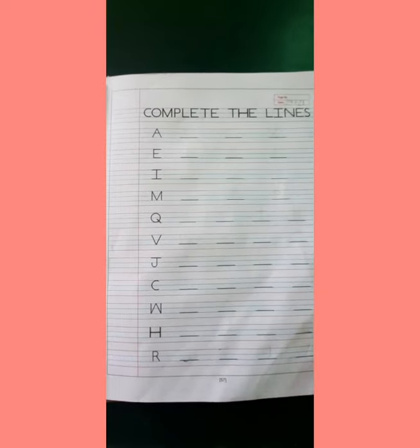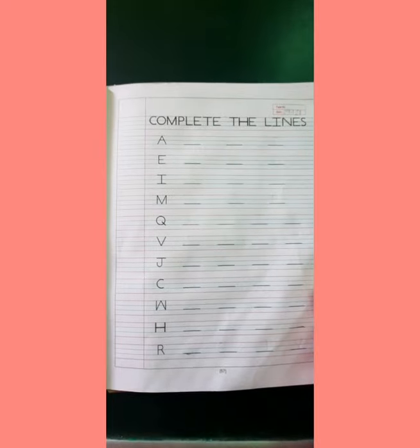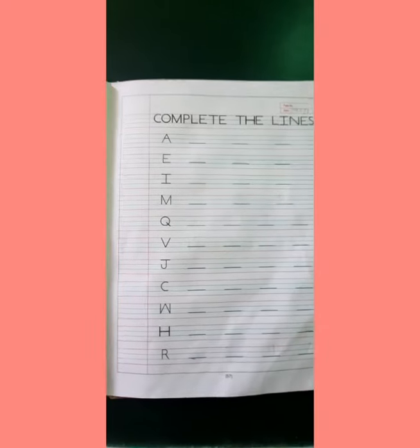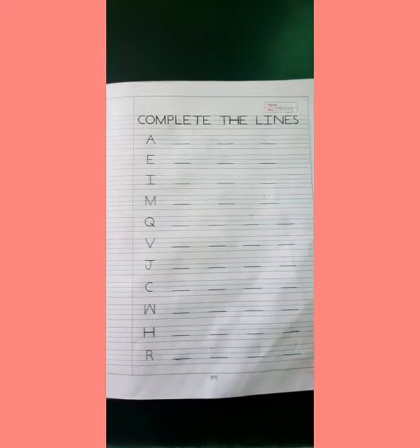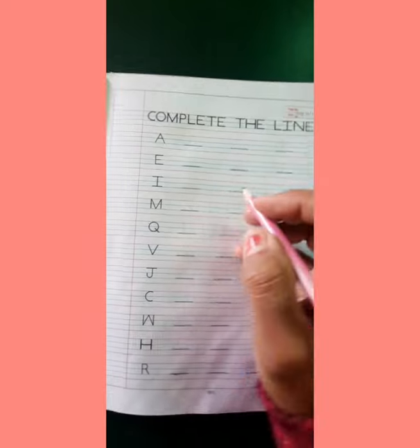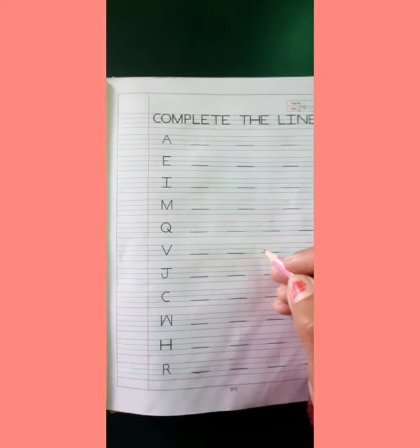Good morning children. Today we are going to complete the lines in your English workbook page number 57. We are going to write the date on top: 29.1.21. So we are going to write complete the lines.